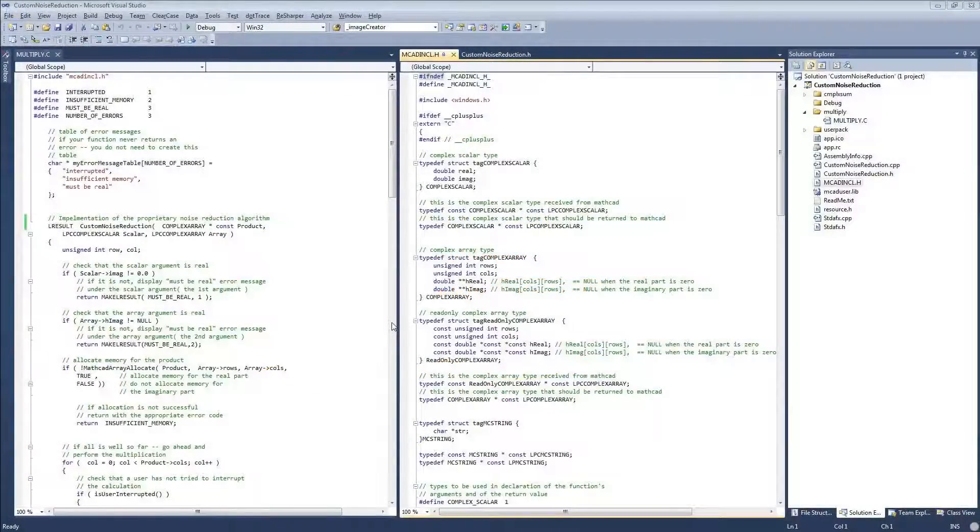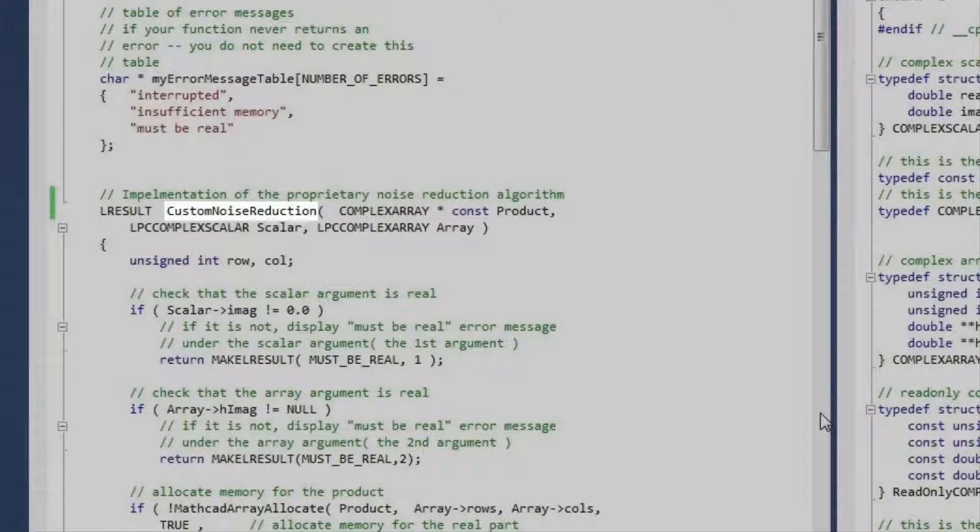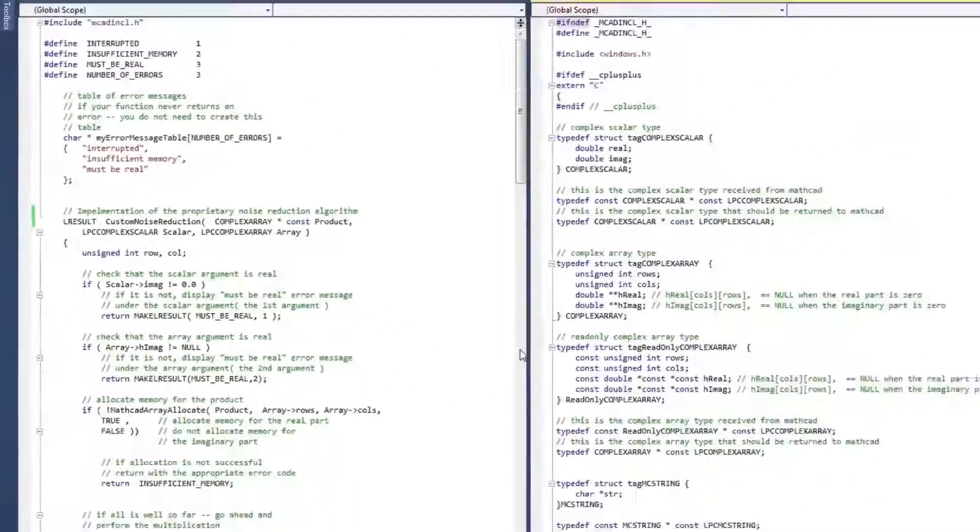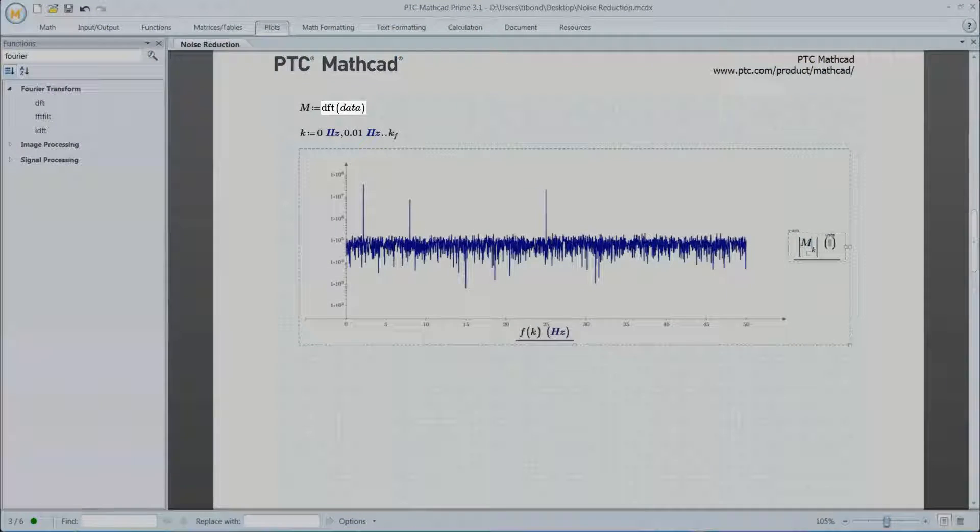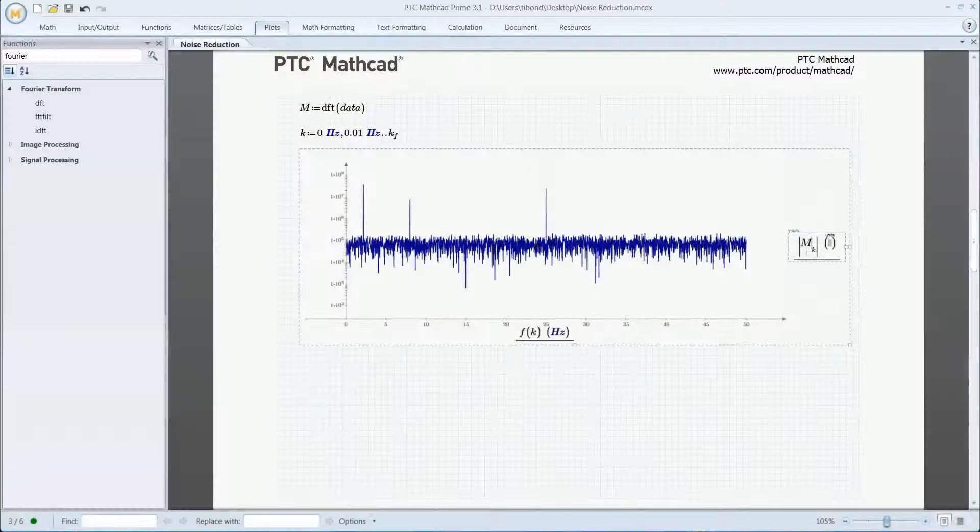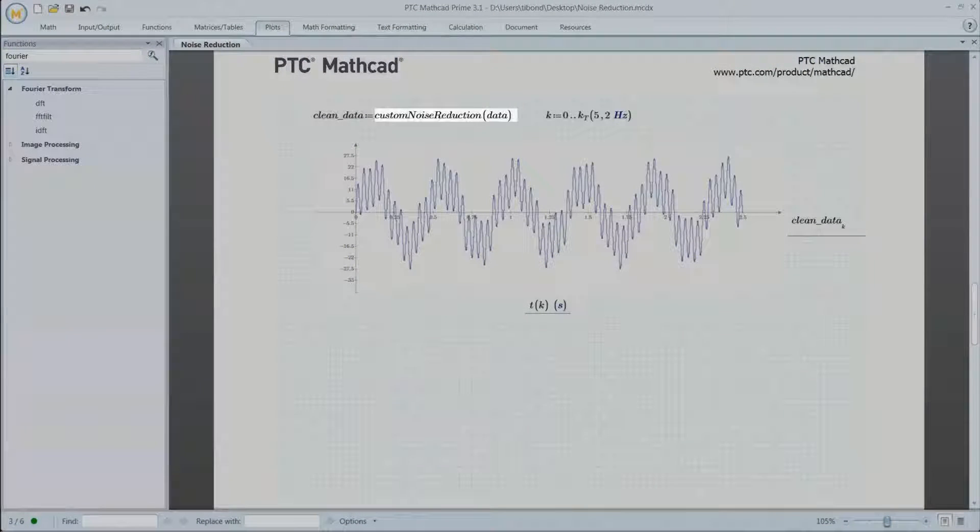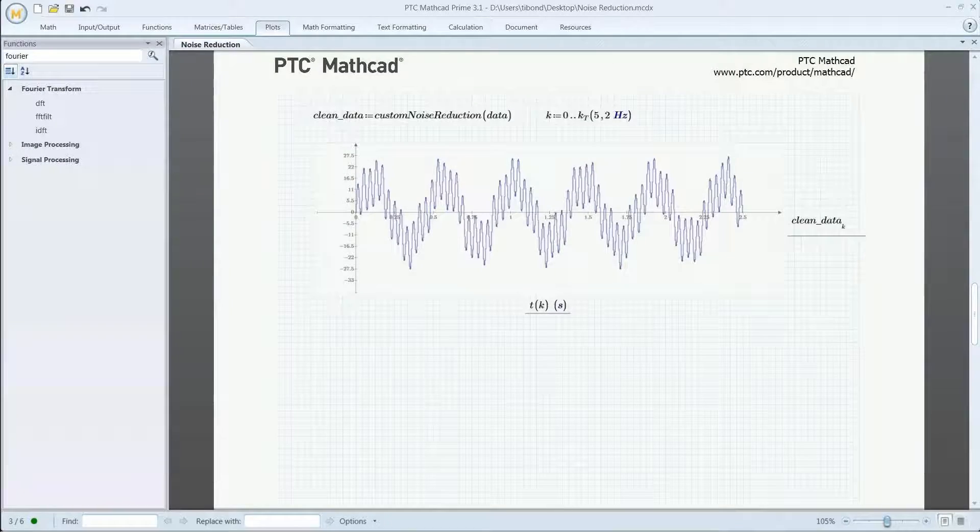For engineers who have existing user-defined functions written in C or C++, PTC Mathcad allows the code to be compiled into a custom function. This capability allows engineers to focus on solving the problem at hand by invoking the function directly in the worksheet.